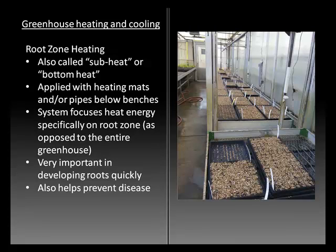Here is a photo of root zone heating. If you look at the lower right-hand side, you can see wires running along the bench with trays of plants placed on top — so only the root zone is heated in this case. Roots need this heat in order to develop quickly and to prevent disease.